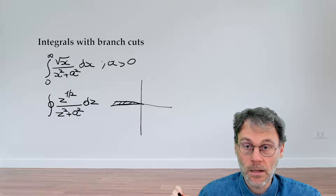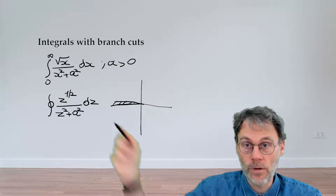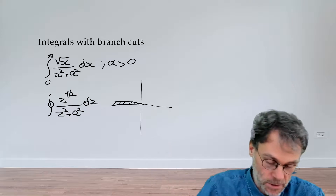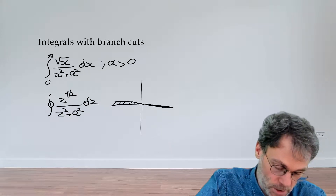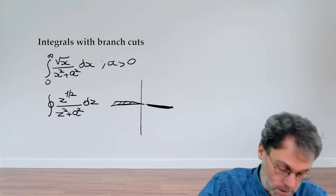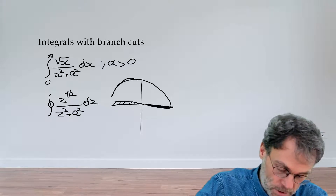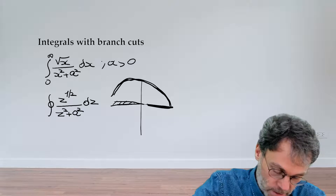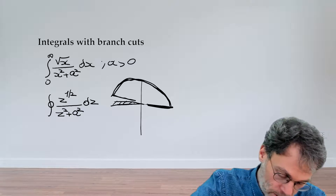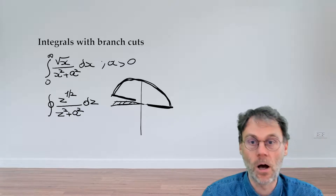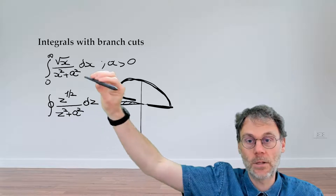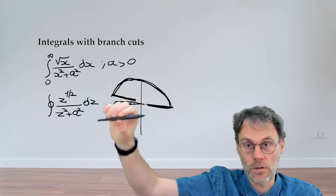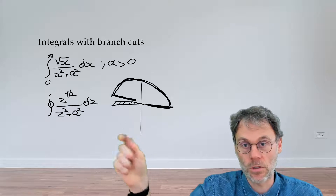Taking this into account, our contour should contain the positive real axis, since that's the integral we're interested in. We close this with a conventional semicircle, but for the negative real axis we make sure to stay in the upper half plane — taking the limit of the path approaching the branch cut from the top, so we never cross it.